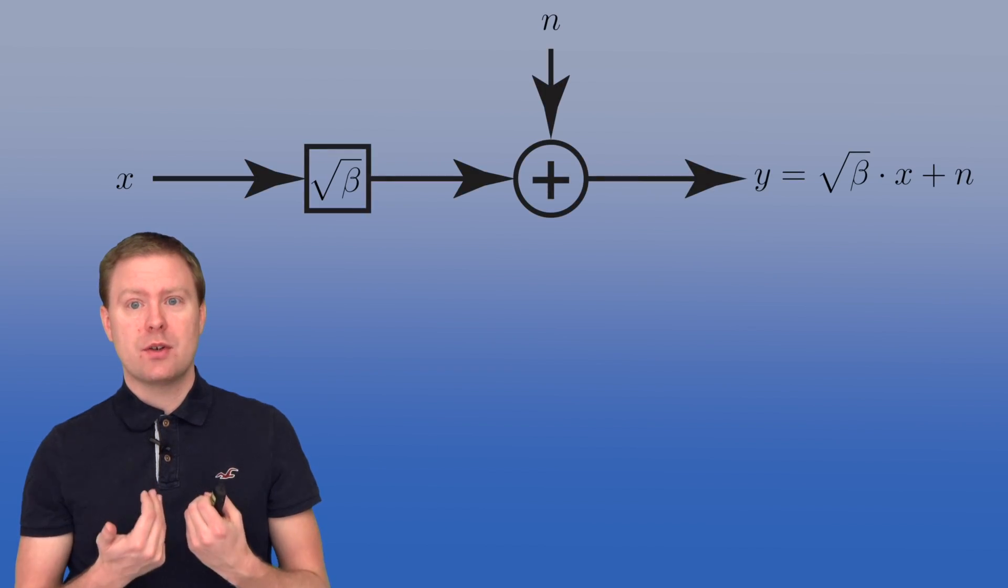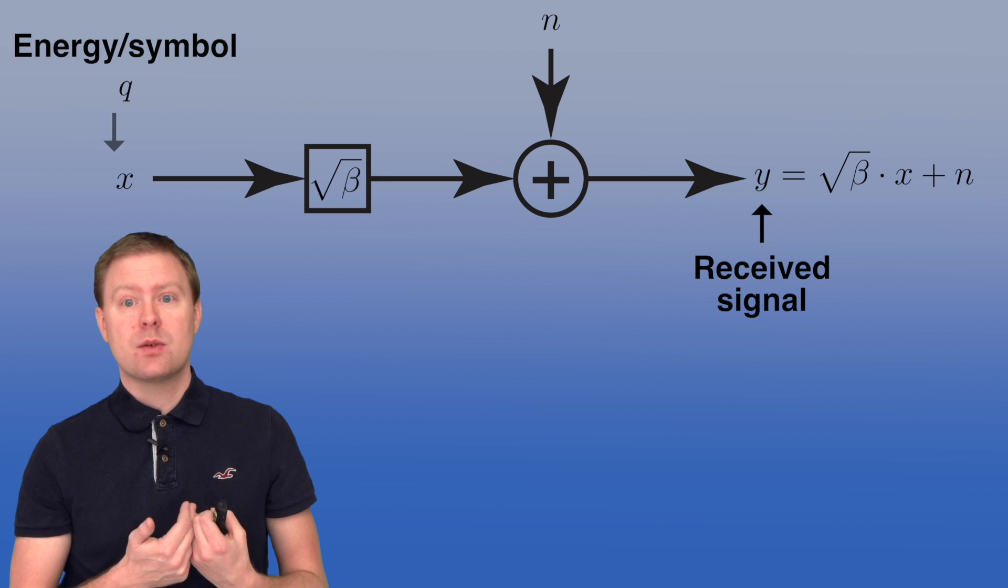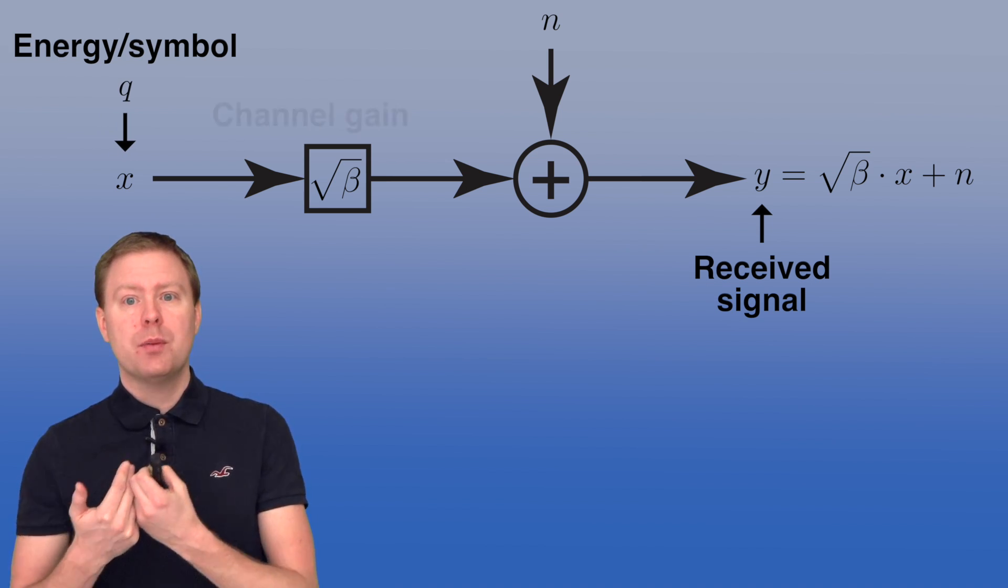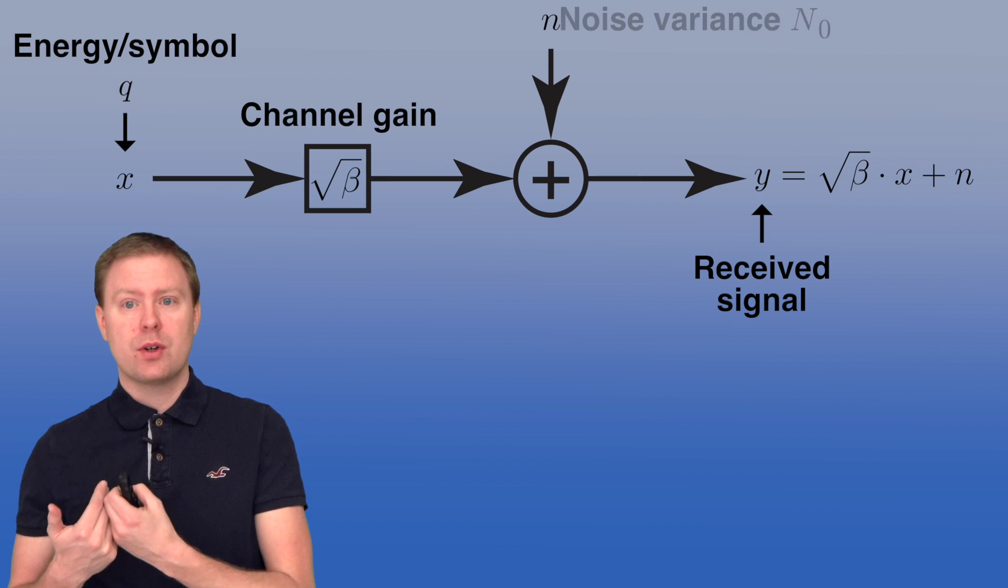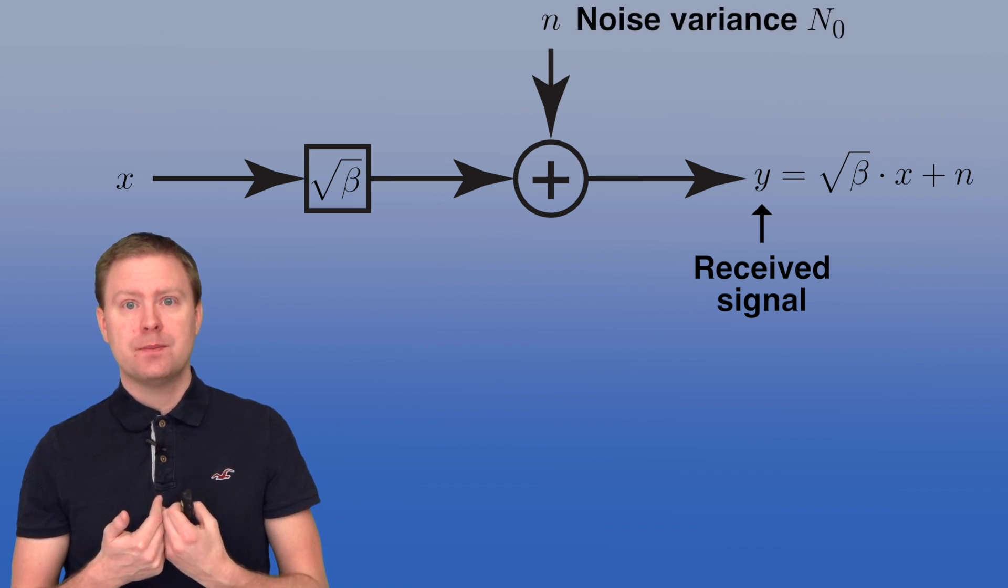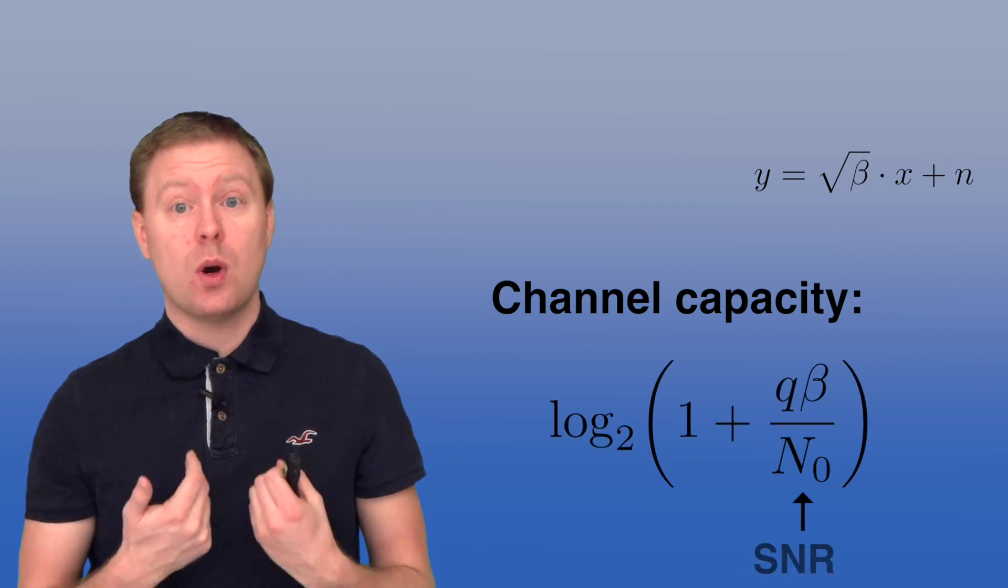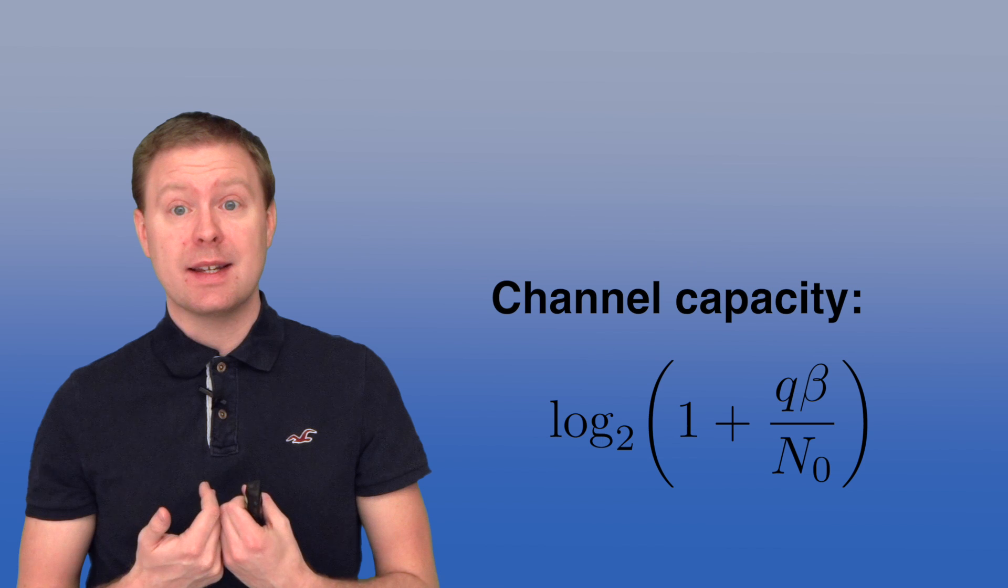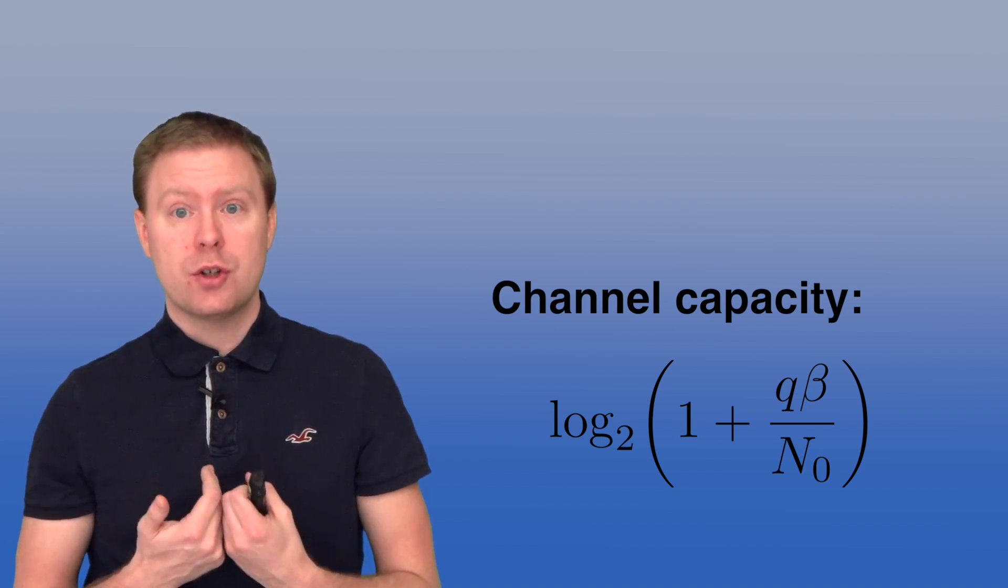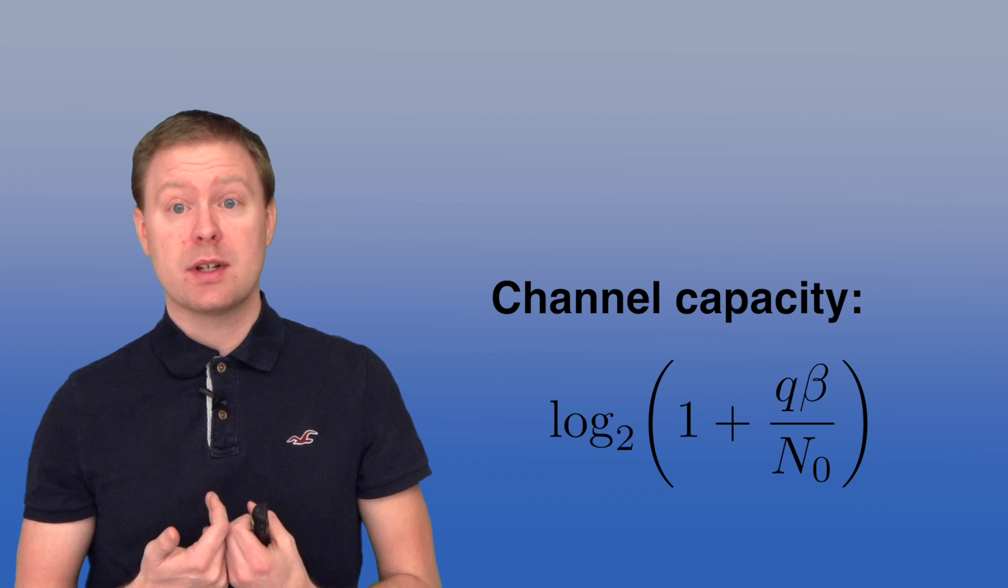We will now consider the case with the received signal, which is a sample Y, is the transmitted signal X multiplied with the square root of beta, which is the channel gain, plus noise that has a variance N0. For this channel, the channel capacity is given by log2 of 1 plus the SNR. And the SNR is the energy per symbol Q multiplied with the channel gain beta divided by the noise variance N0. This is then the channel capacity measured in bits per symbol.